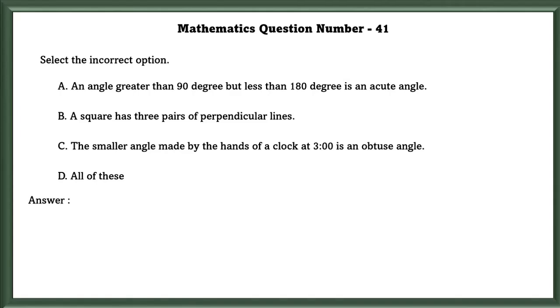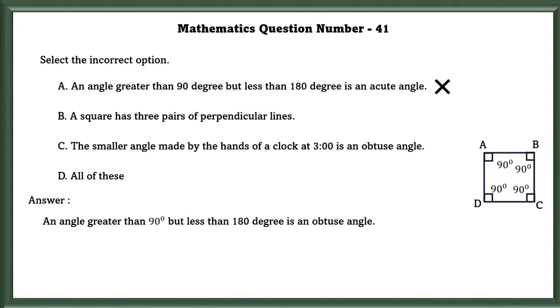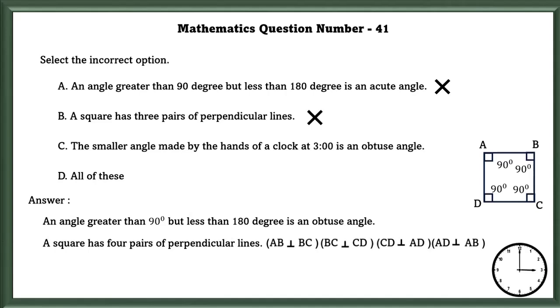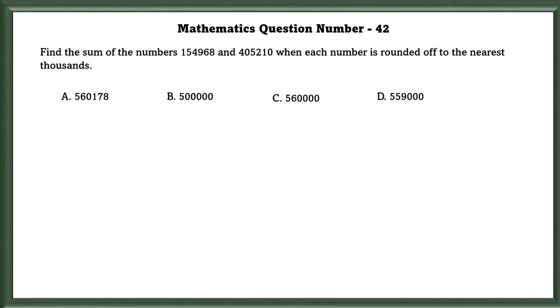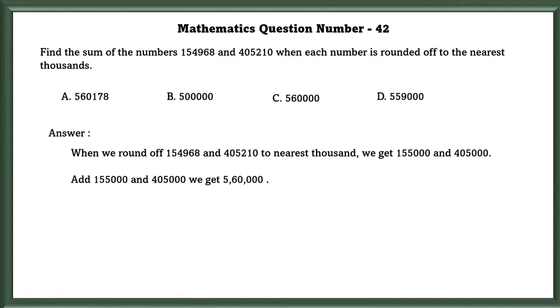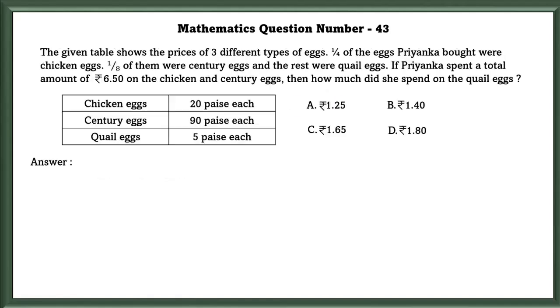Mathematics question number 41. Select the incorrect option. A: An angle greater than 90 degrees but less than 180 degrees is an acute angle. Wrong. An angle greater than 90 degrees but less than 180 degrees is an obtuse angle. Mathematics question number 42. A square has 3 pairs of perpendicular lines. This is also wrong because squares have 4 perpendicular lines. C: The smaller angle made by the hands of a clock at 3 o'clock is an obtuse angle. Wrong. At 3 o'clock the hands make a right angle. So the answer is all of these. Mathematics question number 42. Find the sum of the numbers when each number is rounded off to the nearest thousand. When we round off we get 1,55,000 and 4,05,000 and when we add we will get 5,60,000. So our answer is C.